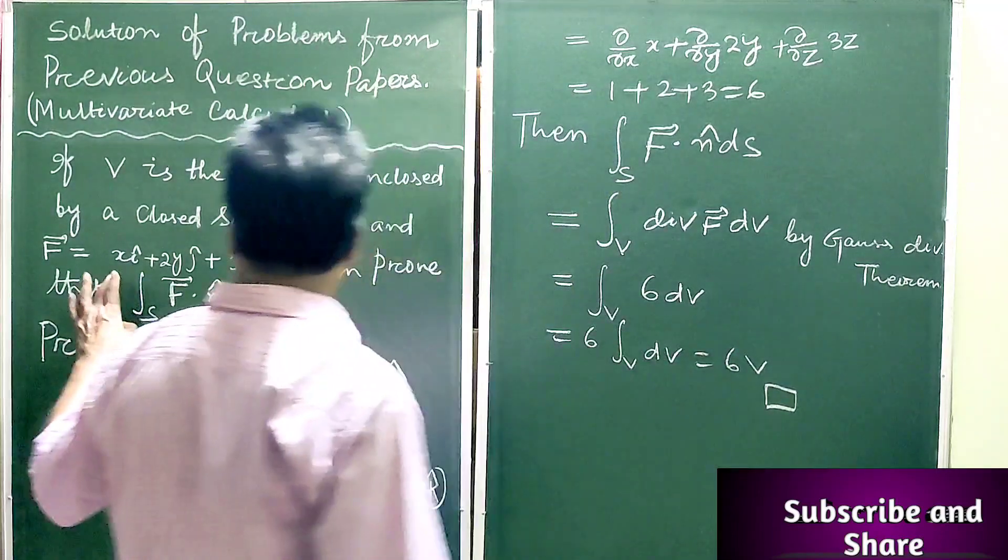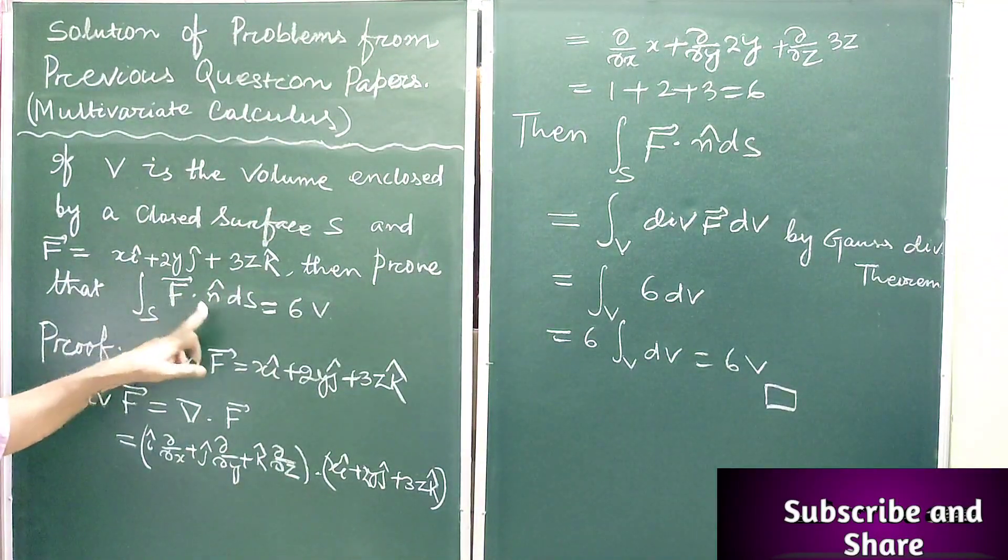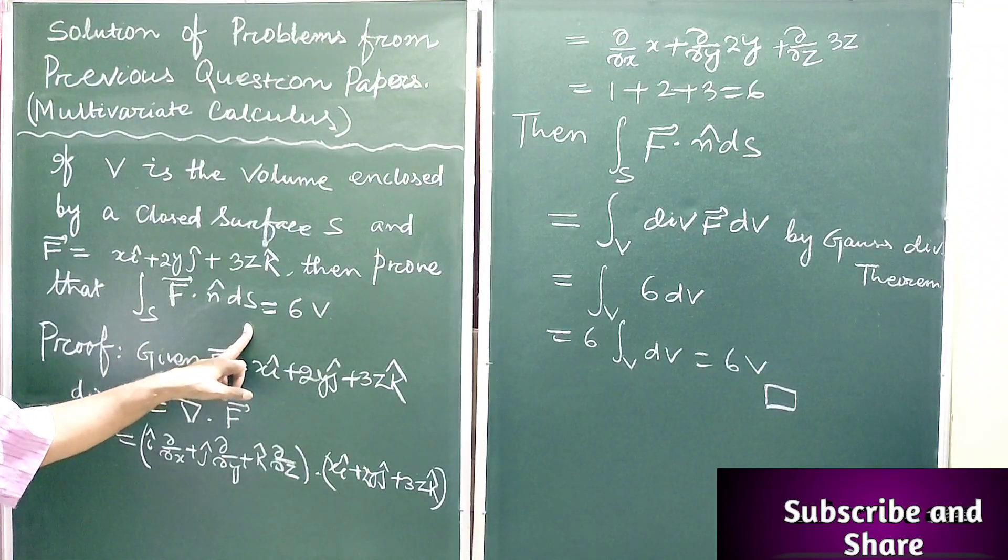So we get integration over S of F dot n cap dS is equal to 6V.